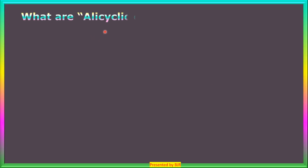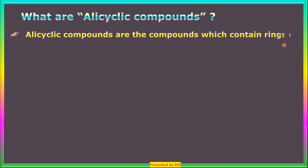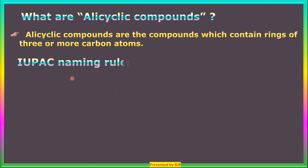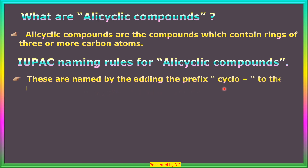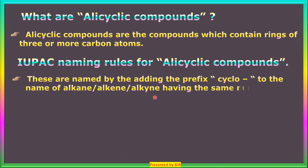What are alicyclic compounds? Alicyclic compounds are the compounds which contain rings of three or more carbon atoms. Here are the IUPAC naming rules for alicyclic compounds. These are named by adding the prefix 'cyclo' to the name of the alkane, alkene, or alkyne having the same number of carbon atoms as in the ring. If the prefix cyclo is added to alkenes, we get cycloalkenes; similarly, cycloalkynes.